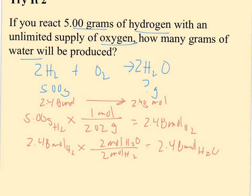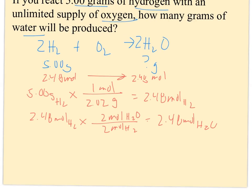And then finally, I can convert that to grams. 2.48 moles of H2O. What I know about grams and moles for water is it's 18.02 grams because there's one oxygen and two hydrogen. So I would expect this to produce 44.6 grams of water.